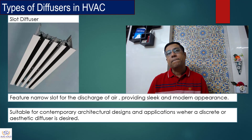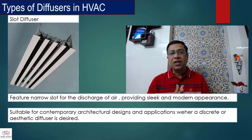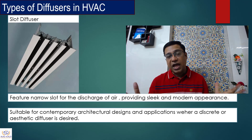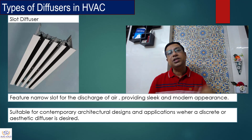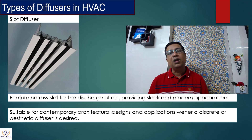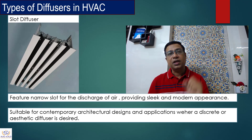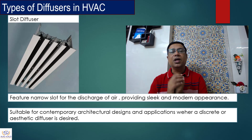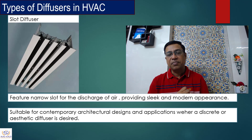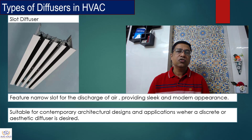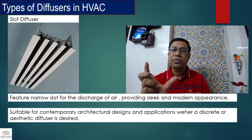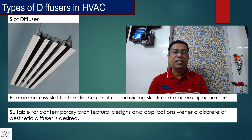Then we have slot diffusers. They have single slot, two slots, three slots, or four slots, and they have a sleek pattern and modern appearance. Having visited the Middle East recently, I have seen this is the most commonly used diffuser across applications — all the offices and malls use these instead of linear grills. It looks good, has multiple slots, the air comes down very easily and you can adjust the slot to do the distribution pattern accordingly. It is suitable for contemporary architectural design and applications where a discrete or aesthetic diffuser is desired. You can have a full length diffuser or slots of different lengths depending on what the architect and the reflective ceiling plan requires.